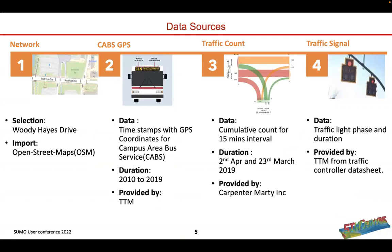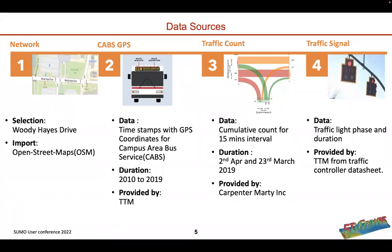For the data sources, we'll start with the network, then the CABs — the local buses inside the OSU campus — then traffic count and traffic signal. We selected a section of the OSU campus, Woody Hayes Drive, and used OpenStreetMaps to get the network for SUMO. The CABs data was collected between 2010 to 2019, because COVID disturbed traffic movement a lot, and was provided by the traffic, transportation, and management department at OSU campus. We also used traffic count data at intersections collected between April 2nd and March 23rd of 2019, with a 15-minute frequency interval. The traffic light phase and actual durations were also implemented in SUMO for real representation of the traffic light.